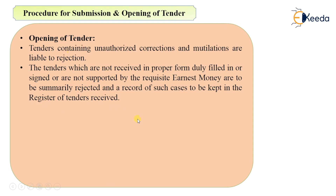So this is the procedure for the submission of tender and opening of tender. The tender will be opened in the presence of contractors or their representatives. The officer will check for unauthorized corrections, verify all data is properly filled, confirm the standard format is followed, and check that earnest money is deposited and attached. If signatures are missing, proper forms are not filled, or earnest money is not deposited, the tender will be rejected, and rejected tenders will be recorded in the register of tenders.